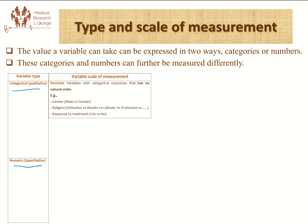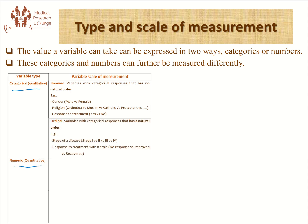So when these are just names or labels of responses which do not have any sort of natural order or rank relationship between themselves, we call it a nominal variable. The same works for religion and response to treatment with a yes or no response.